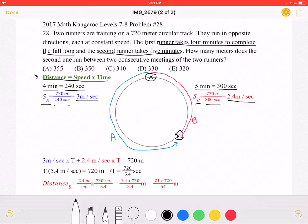And we know that distance is equal to speed times time. So the distance of runner A must be equal to speed of 3 meters per second times time, and the distance of runner B must be equal to speed of 2.4 meters per second times time.